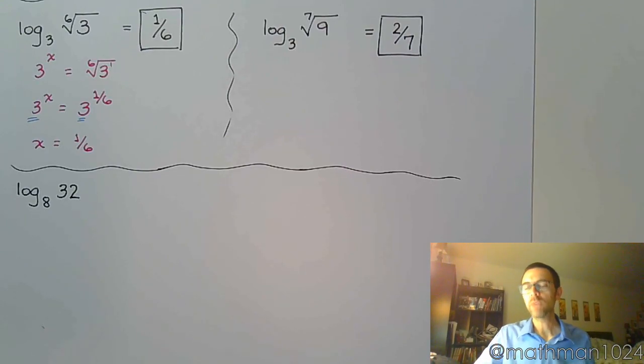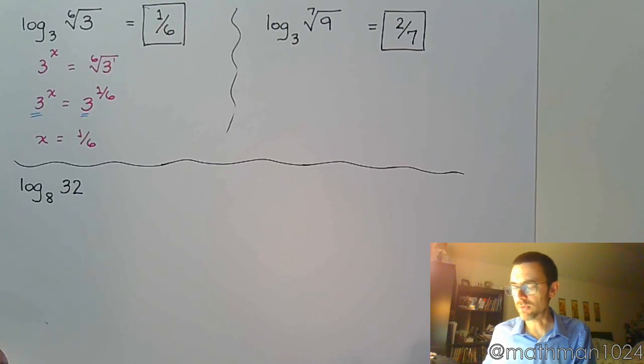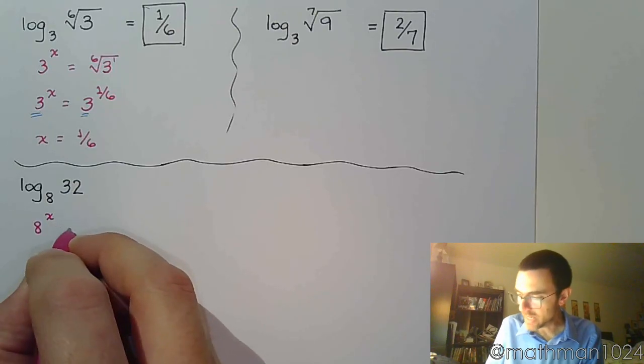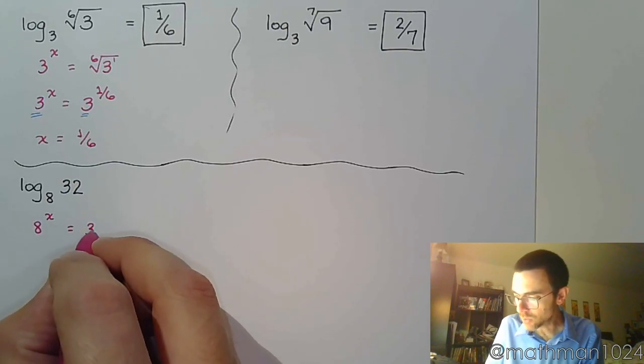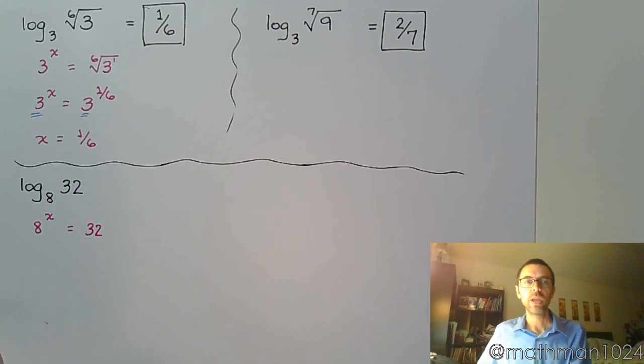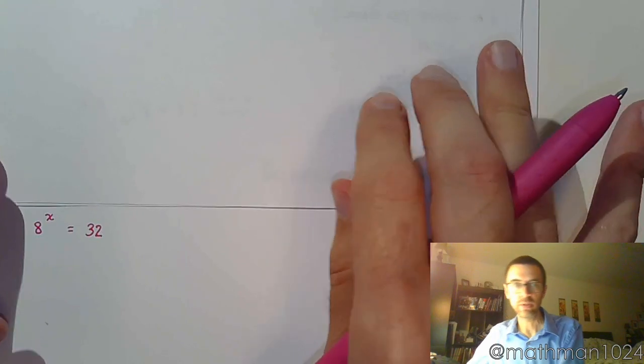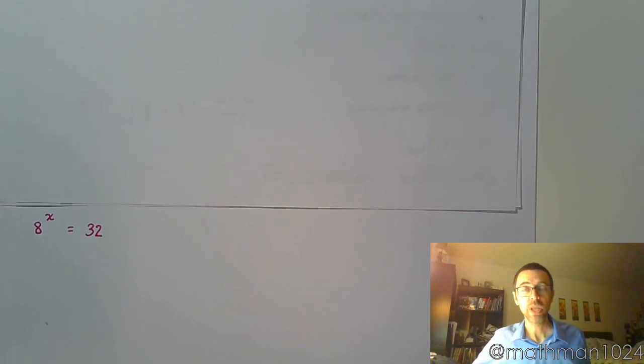But again, we want to rewrite this as something that's exponential. And it might make it a little bit easier for us. So my base is 8. I'm trying to find the power of 8 that is equal to 32. Now, if you kind of block out everything else, and you pretend that none of this stuff has ever happened, I now have an exponential equation. And my goal here is to rewrite each side so that they have the exact same base.